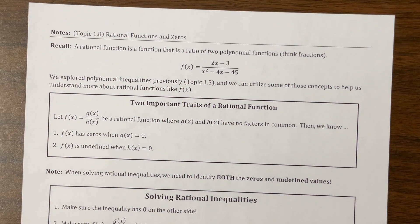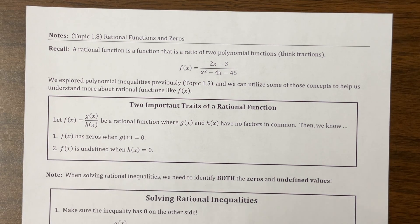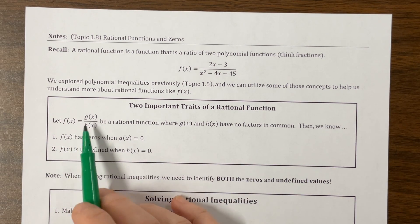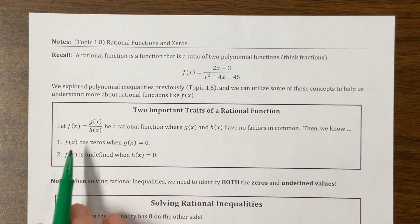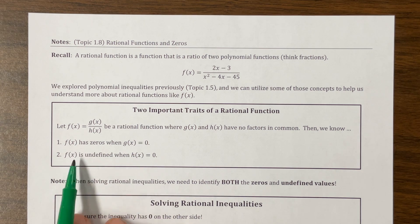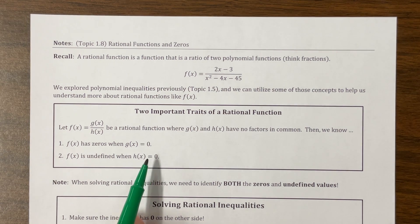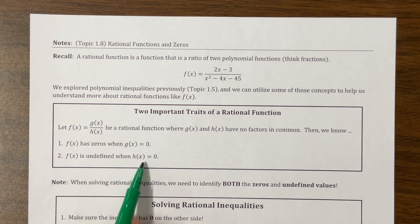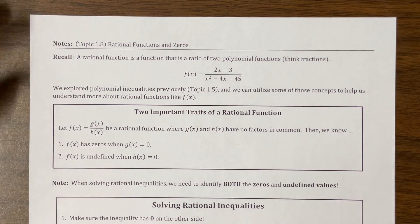So a rational function is the ratio of two polynomial functions. So if we have a polynomial over a polynomial, it's going to have zeros anywhere the numerator is equal to zero, and it's going to be undefined anywhere the denominator is equal to zero. We will discover later that where it's undefined, it'll either be an asymptote or a hole. So we'll talk about that in other videos.